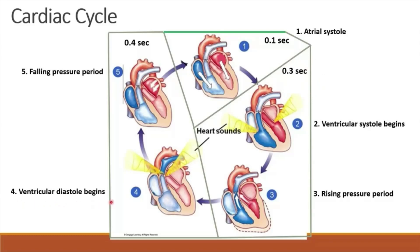Ventricular diastole begins in the fourth phase. The pressure within the ventricles is now lower than the pressure within the pulmonary arteries and aorta, causing the pulmonary semilunar valve and aortic semilunar valve to close. Blood recoils against the closed semilunar valves and produces the second heart sound — the 'dub' sound — which is high-pitched, loud, sharp, and short.